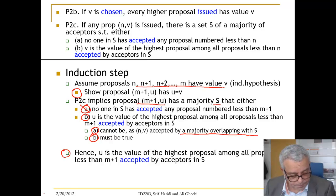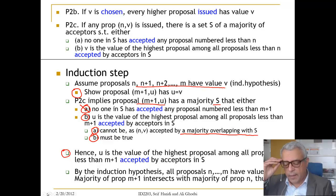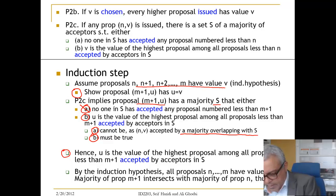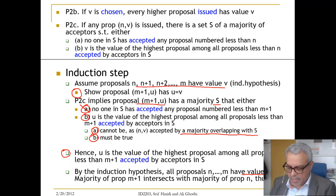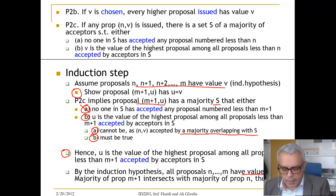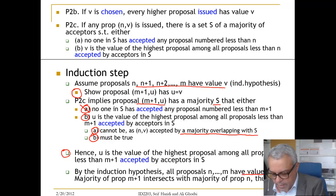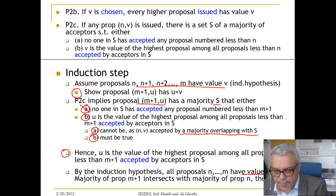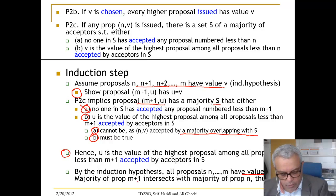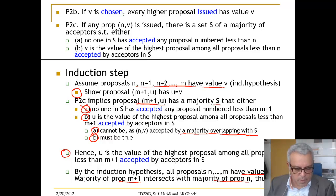So what is true is that U is the value of the highest proposal among all proposals less than M+1. By the induction hypothesis, all proposals less than M+1 have value V as chosen. Because we are picking a majority, the majority of acceptors must intersect with the majority of acceptors of the previous proposals. Therefore they intersect on value V — and so what we pick is value V, the value with the highest proposal number.